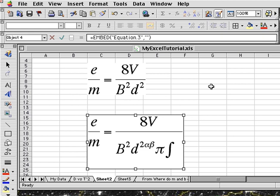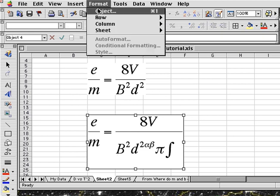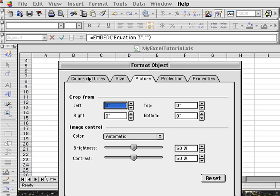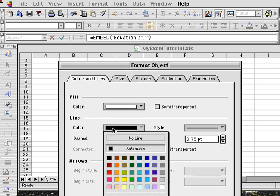And this one has a border around it unlike this. So I can just turn off the border by formatting the object, the colors and line and set it to no line.